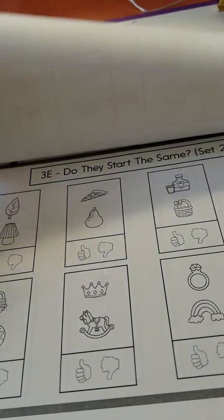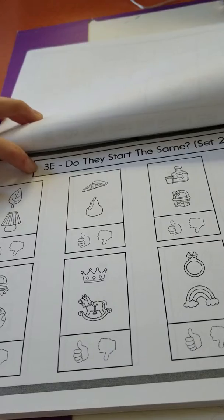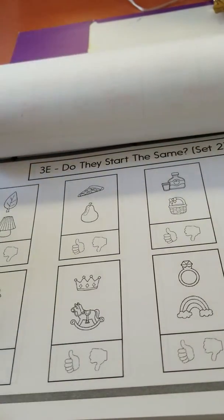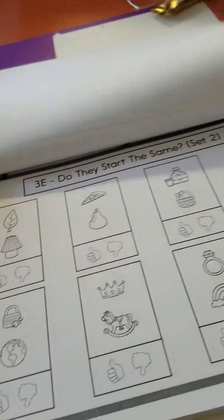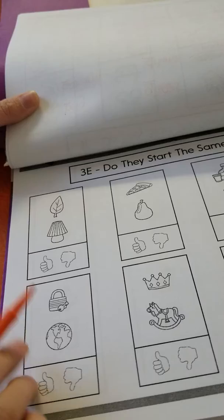All right scholars, this is my guided reading activity book 3E, set 2. This is kind of the same thing that we were doing on set 1. You're going to do the sounds and decide if they sound the same or they don't sound the same.